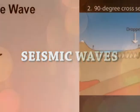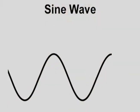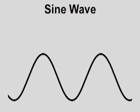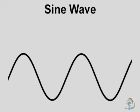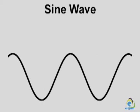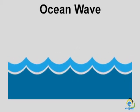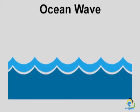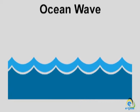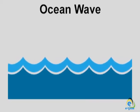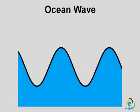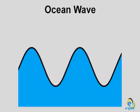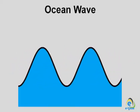In deep water, the height of one tsunami wave could be about one meter, but the wavelength may be as much as 500 kilometers. Tsunamis have long wavelengths.